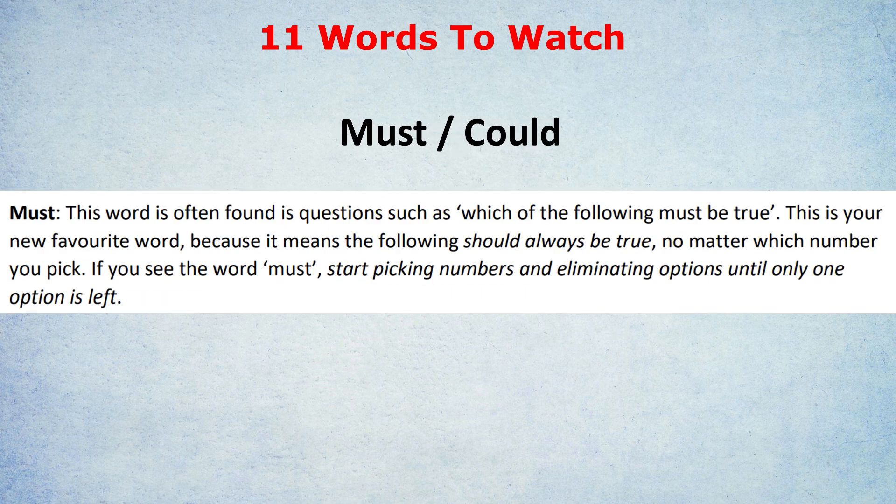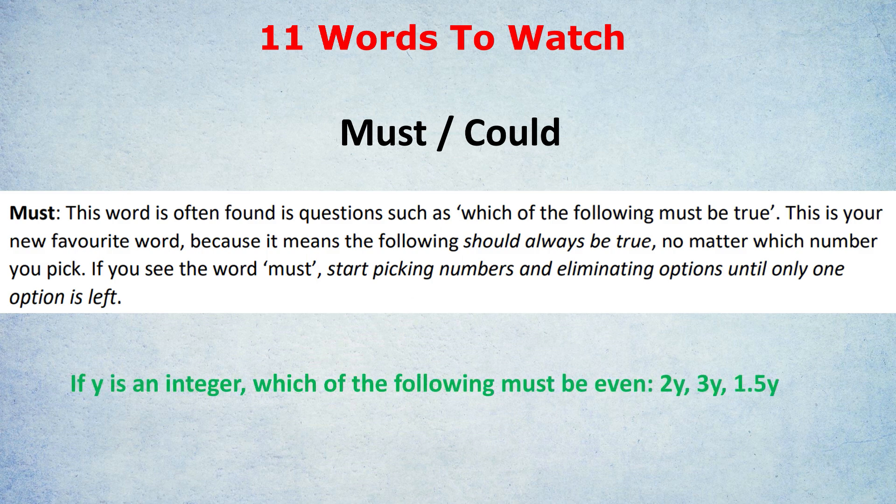Next, must or could. And this is really important. Often in the GRE, if it's one of those tick-all-that-apply questions, they will either use the word must or the word could. And there's a difference between them. Let me try and give you an example to explain the difference. If Y is an integer, which of the following must be even? You're looking for an answer that is even in all circumstances. It must be even. Just picking one number and it works is not enough. It must be in every number you pick, you're getting an even answer.